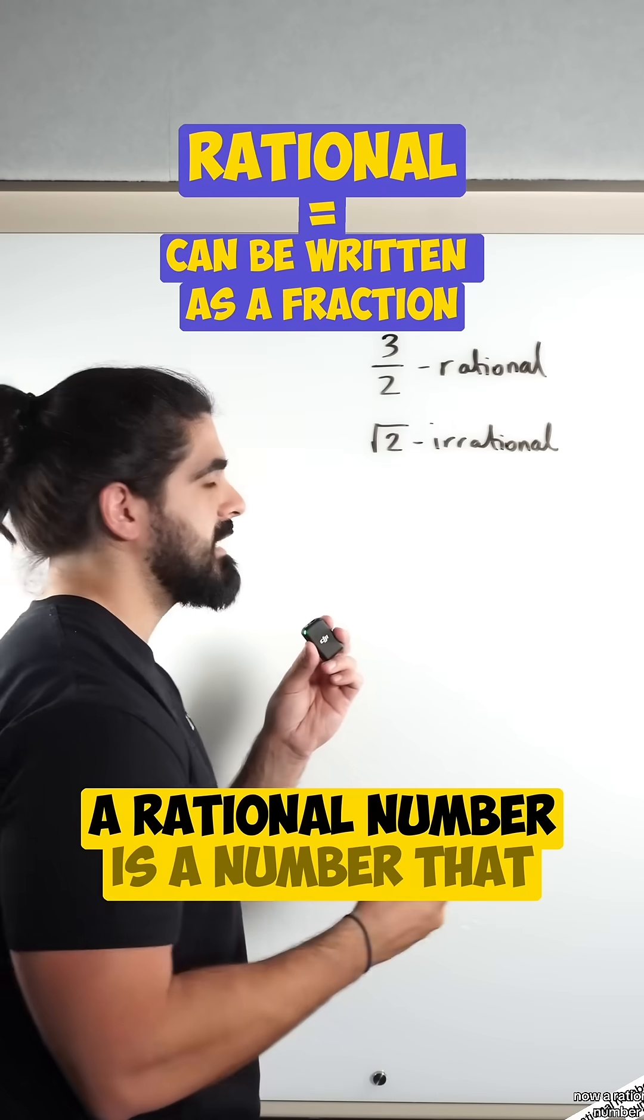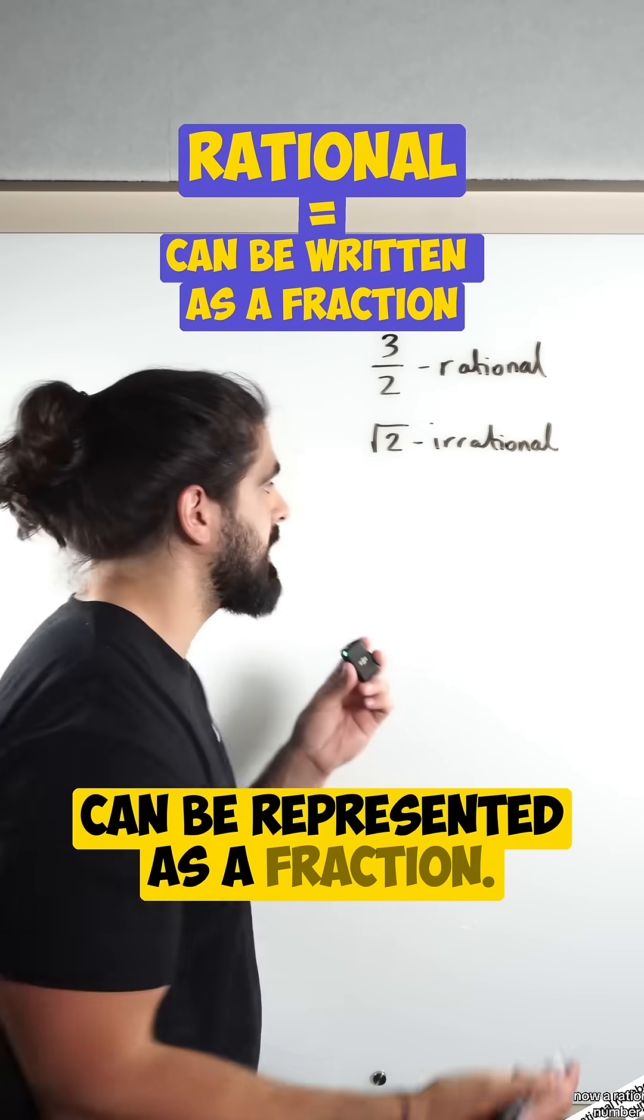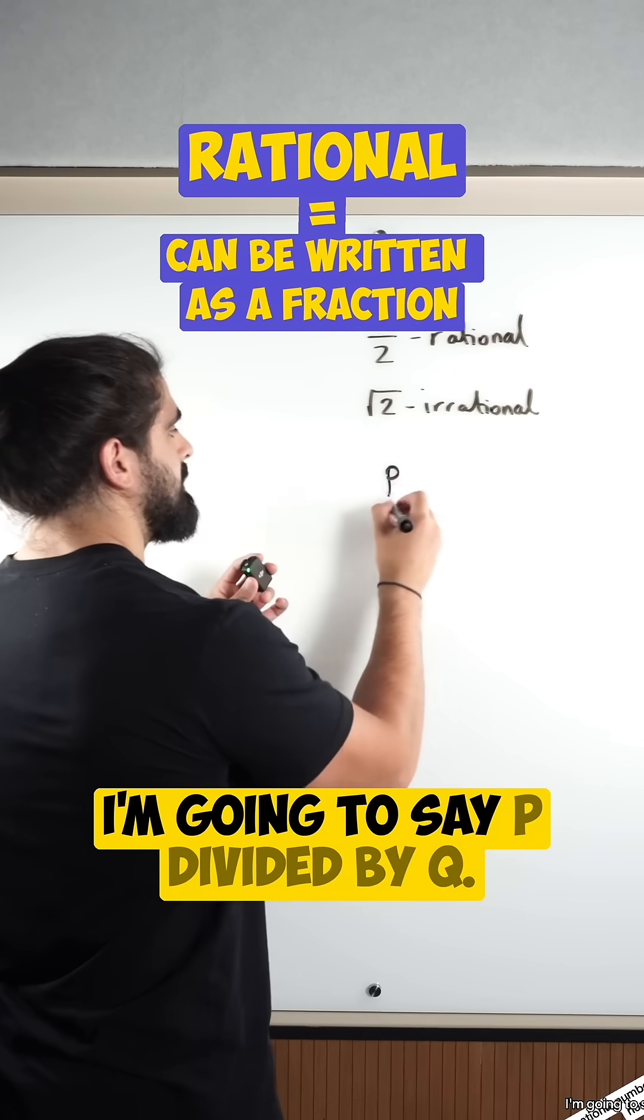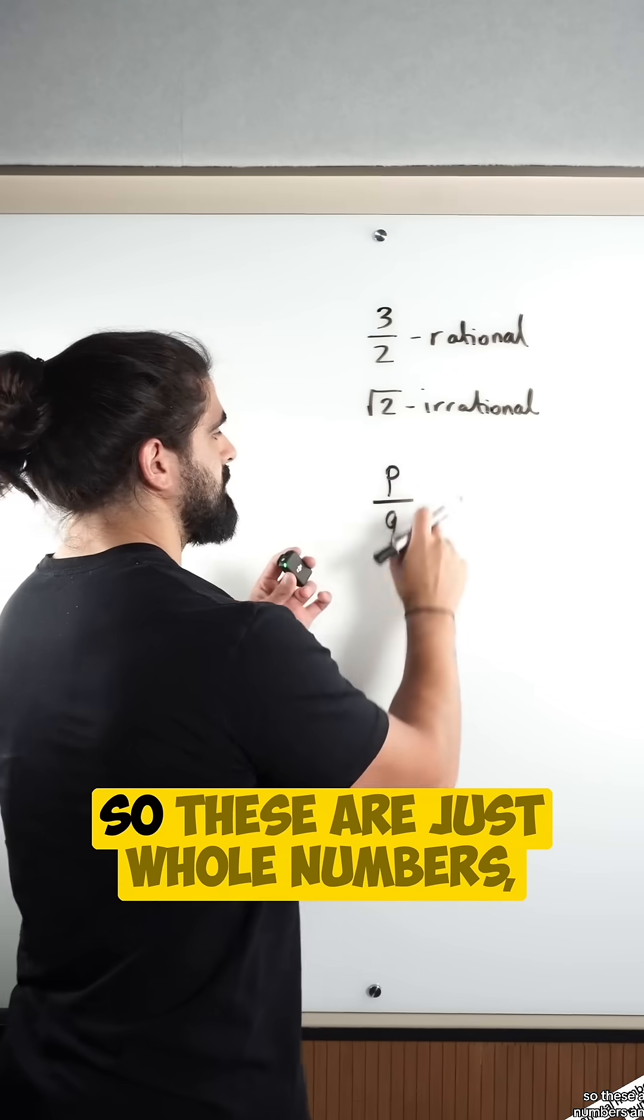Now, a rational number is a number that can be represented as a fraction. I'm going to say p divided by q, so these are just whole numbers.